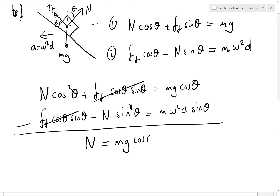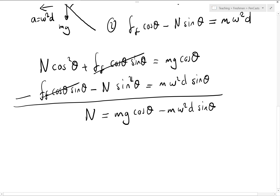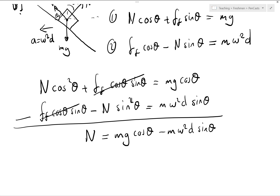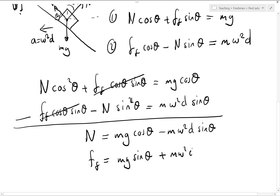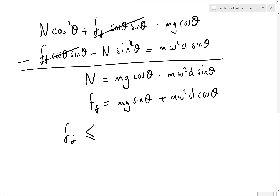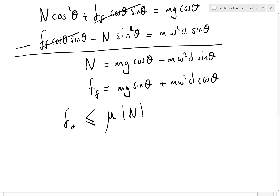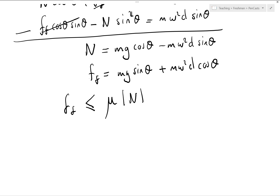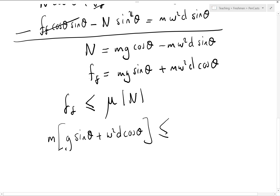Using cosine squared theta plus sine squared theta equals 1, we find: N equals mg cosine theta minus m omega squared d sine theta. Then multiplying the first equation by sine theta and the second by cosine theta and adding gives: f_friction equals mg sine theta plus m omega squared d cosine theta. The condition for no sliding is that f_friction must be less than mu_s times N.